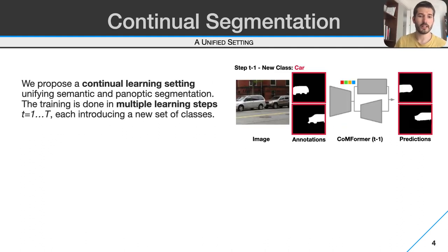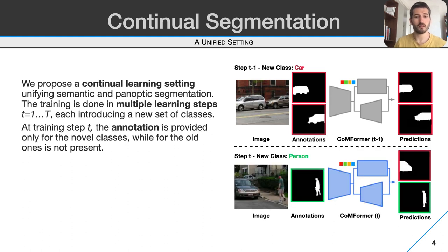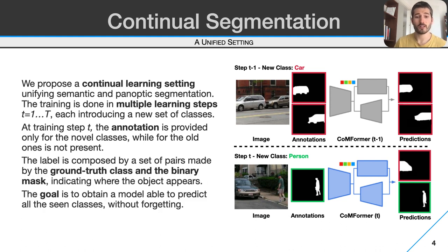In particular, we devise a scenario divided in three training steps. On each step, we aim to learn a novel set of classes which extend the previous knowledge. To do so, we are provided a new dataset containing annotations only for the novel classes, which reduces the training time and annotation cost. Note that, as in previous continual learning scenarios, while all classes may be present in the image, no annotation is provided for them. The annotations are composed of a set of pairs, each made of a ground truth class, such as car, and a binary mask indicating where the objects appear in the image.